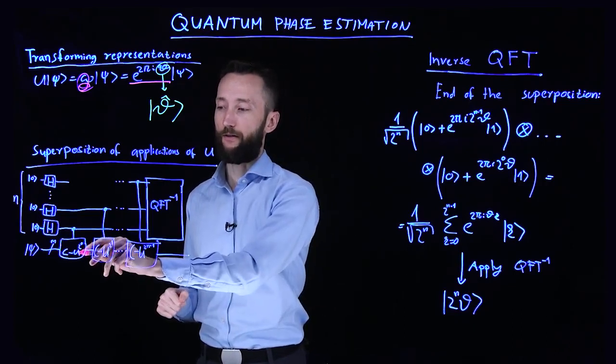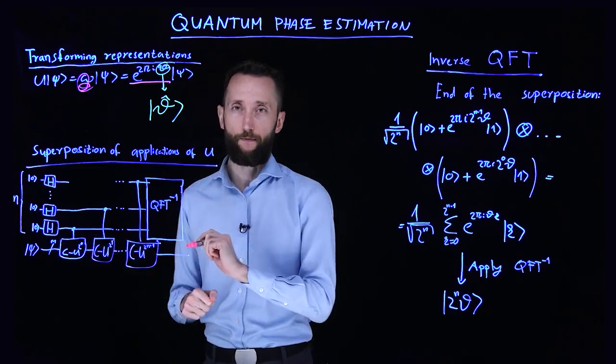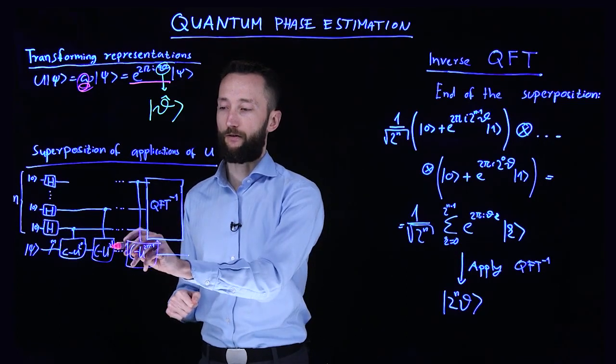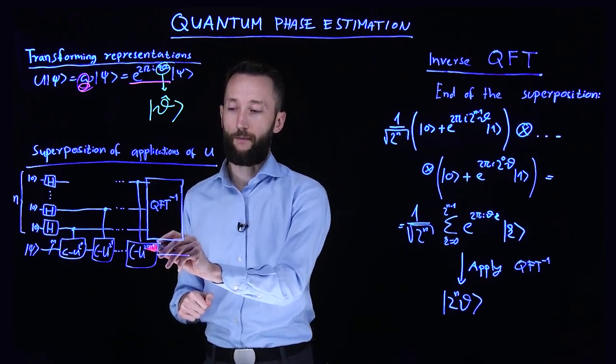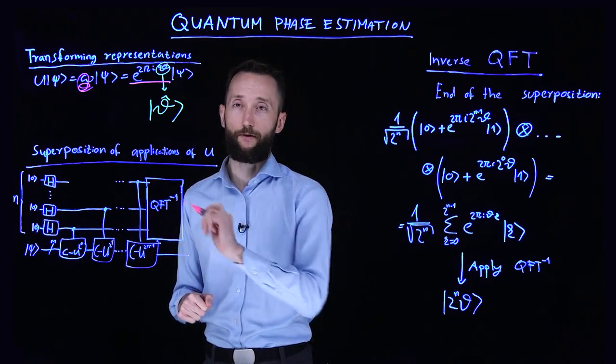In the first application, we apply the unitary to the power of 2^0. Then it's the unitary to the power of 2^1, and so on, all the way to the unitary applied 2^(n-1) times.